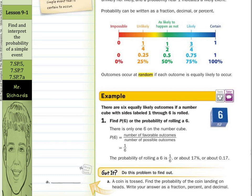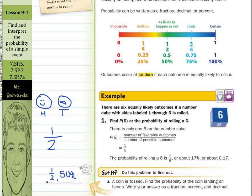Next, in our got it question, a coin is tossed. Find the probability of the coin landing on heads. Write your answer as a fraction, percent, and decimal. Well, if I toss a coin, I could either get heads or tails. So if you're looking for the probability of getting heads, that is one outcome out of two possible outcomes. And so one-half is our solution, which can also be expressed as fifty percent or zero point five.